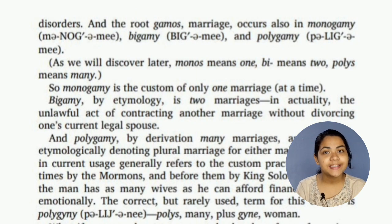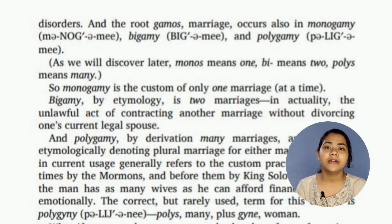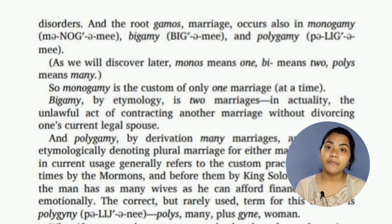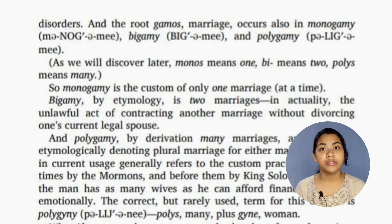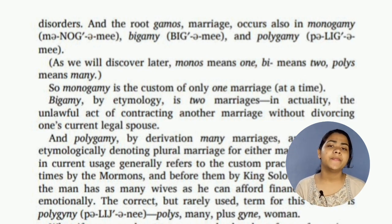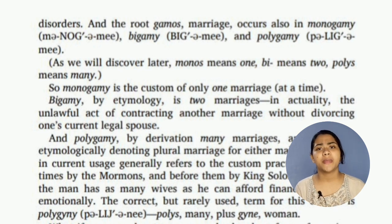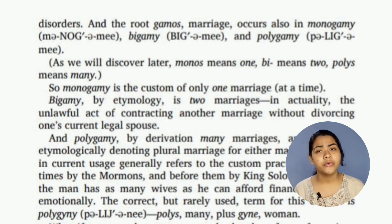The root 'gamos' simply means marriage. Monogamy means one marriage. Bigamy means two marriages — the unlawful act of contracting another marriage without divorcing one's current legal spouse.